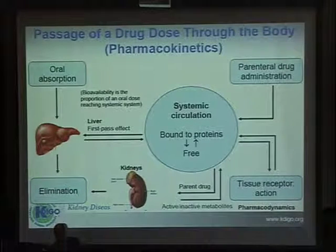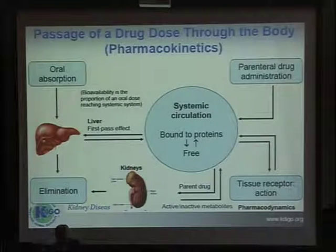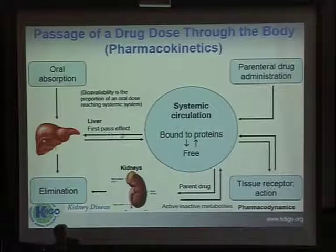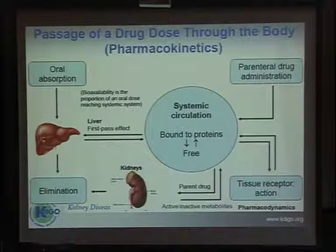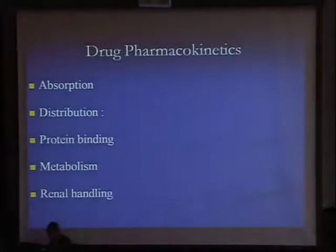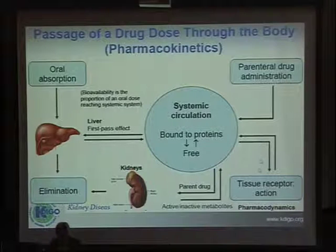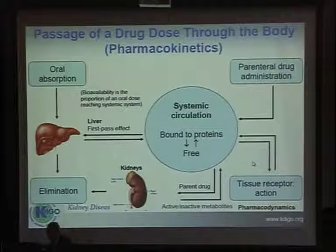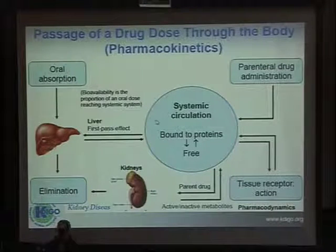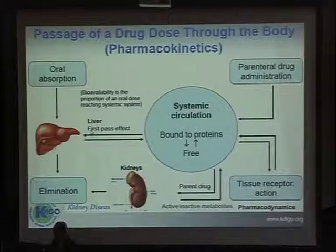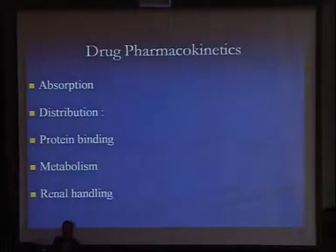When the patient takes a drug orally, it's going to be absorbed and then it will undergo first pass to the liver. Then it's going to be distributed to the tissues and reaches the systemic circulation where protein binding takes place. It is only the free portion of the drug that will exert its effect at the tissue receptor, and it's only this part which is going to be cleared by dialysis. After that, the drug is going to go back to the liver for metabolism and elimination, and also to the kidney for clearance.